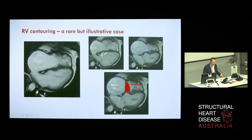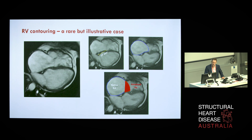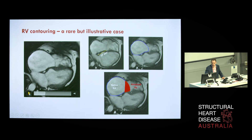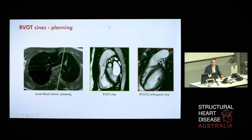A rare but illustrative case that sums up many of these messages: the tricuspid septal leaflet is significantly apically displaced up to 37 millimetres, making the functional right atrium very large while the right ventricle is relatively smaller, with an area of atrialized right ventricle — that of course is Ebstein's anomaly. One would need to be very careful when contouring the right ventricle in order to accurately identify where the tricuspid valve plane is and assess its various septal attachments.